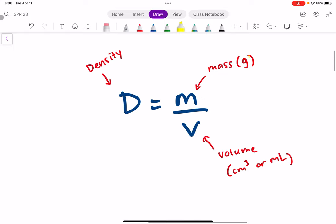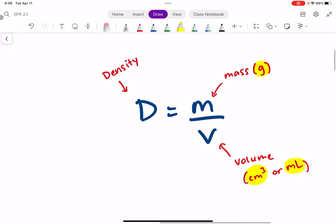Remember, we always report the mass in grams for density and the volume in either cm cubed or mL, depending on whether we have a solid or a liquid. If you have any two parts of this equation, you can solve for the other parts.